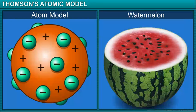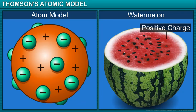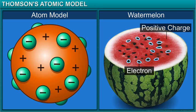This can also be explained through the example of a watermelon. The positive charge in the atom is spread all over like the red fleshy part of the watermelon while the electrons are embedded into the atoms like the seeds of the watermelon.